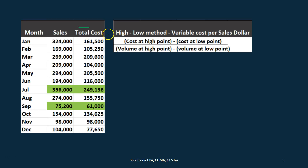To do that we're going to use the high-low formula. The high-low formula is the cost at the high point minus the cost at the low point. Looking at the cost data, the high point is $249,136 and the low point is $61,000. Then we divide by the volume at the high point minus the volume at the low point — in this case using sales dollars — which will be $356,000 at the high point and $75,200 at the low point.